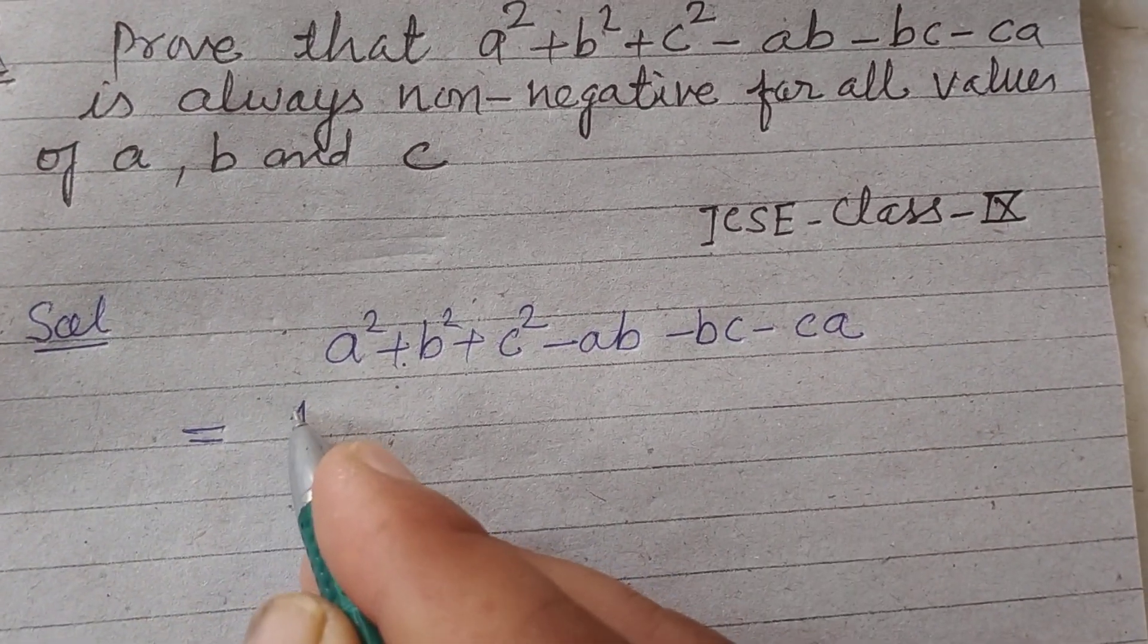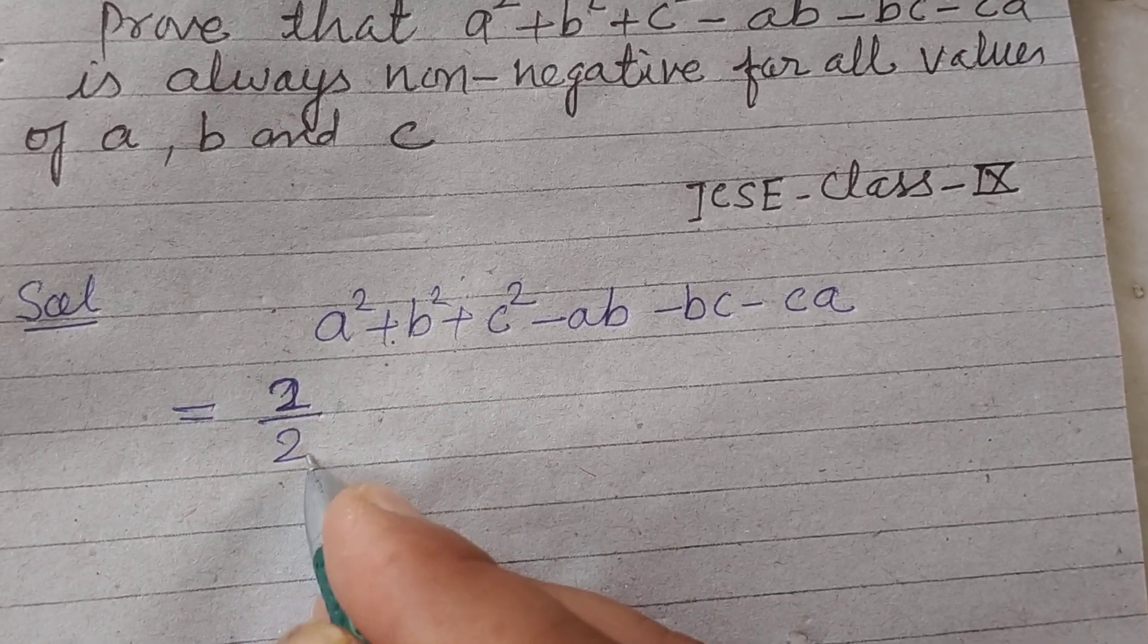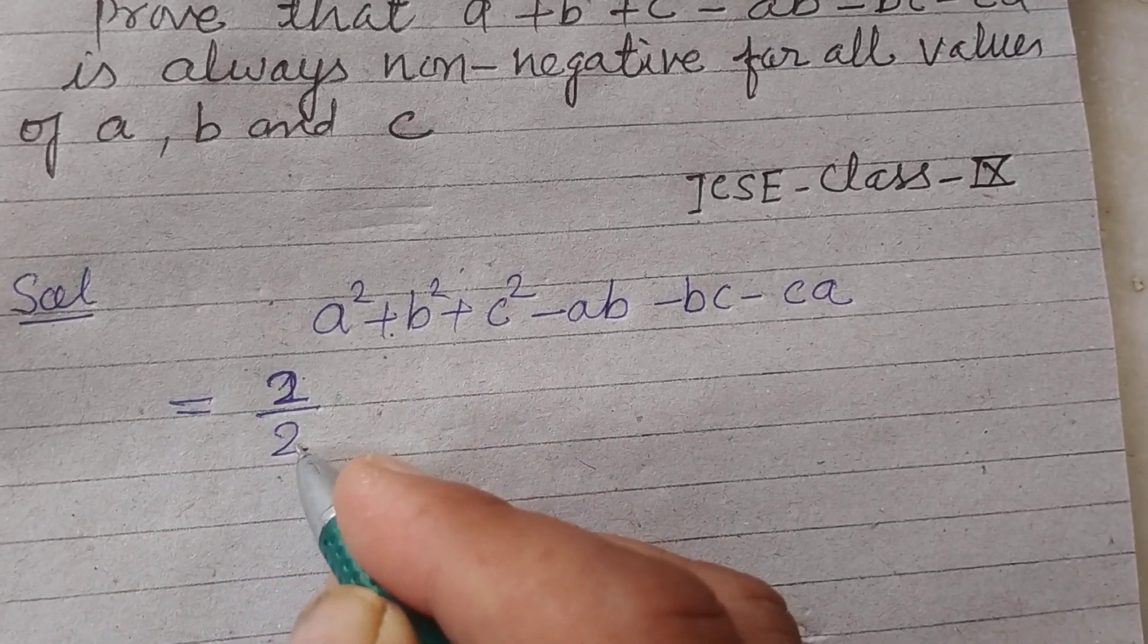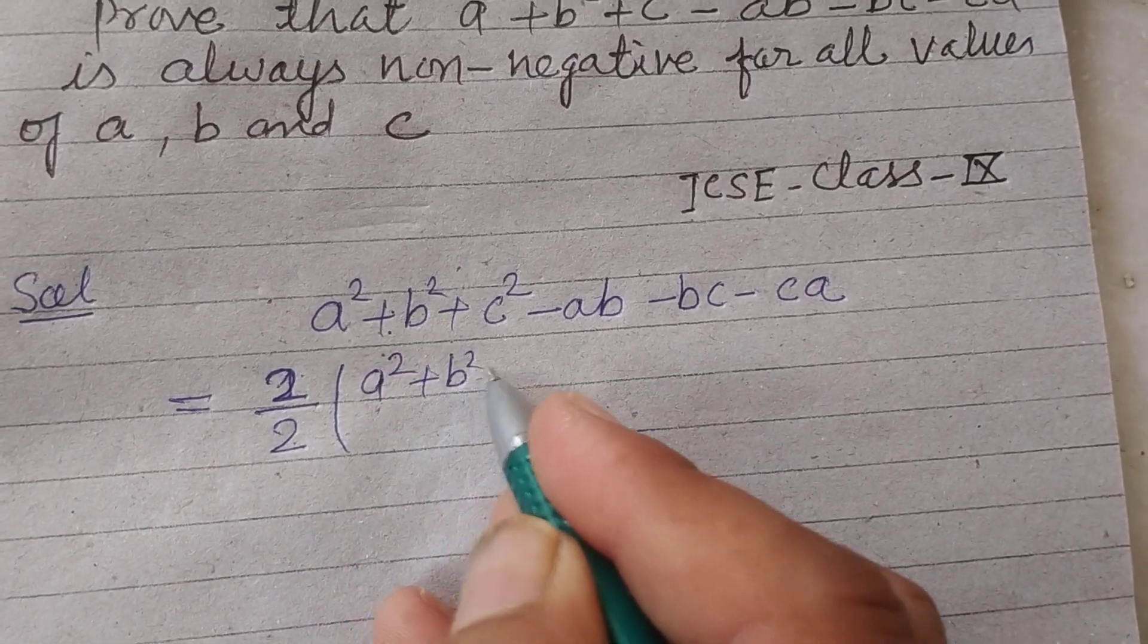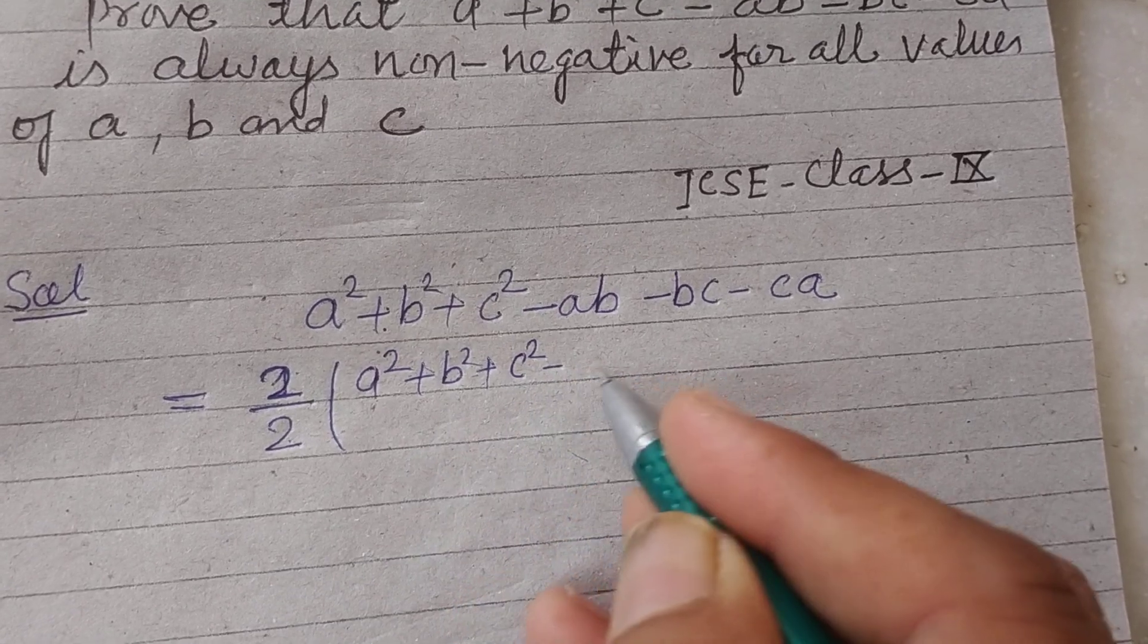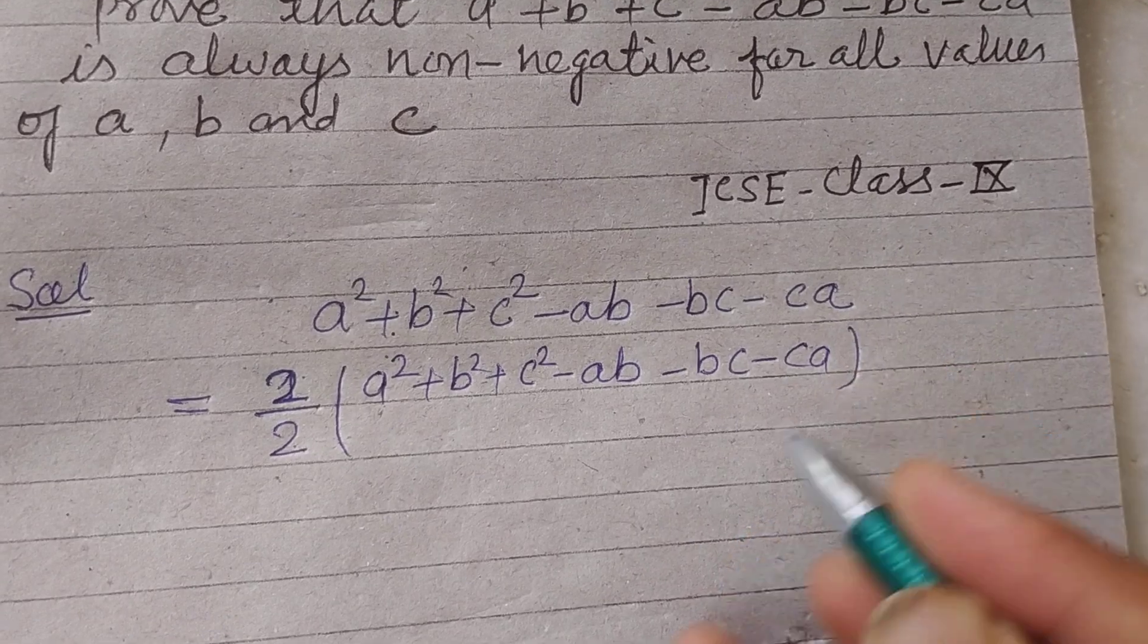Now in next step, we will multiply this by 2 and also divide by 2. So a² + b² + c² - ab - bc - ca.